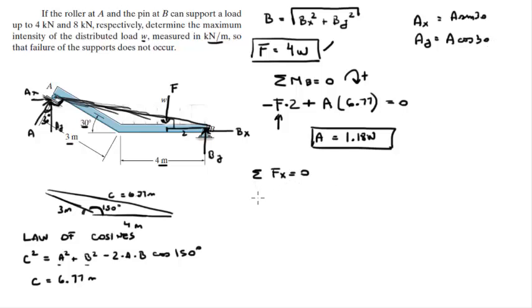So sum of the forces in the X is equal to 0. So the forces acting in the X are AX which is A sine of 30 and going towards the left is BX is equal to 0. So as you can see BX is equal to A sine of 30. And A sine of 30 we plug in 1.18 W for A and we get that BX is equal to .591 W.